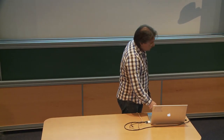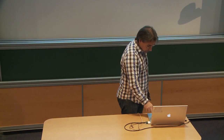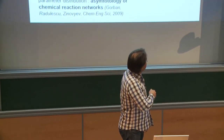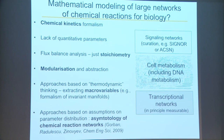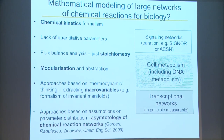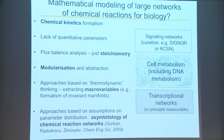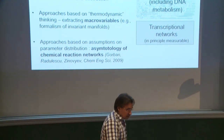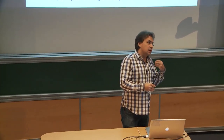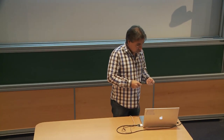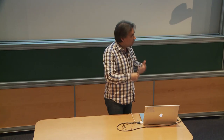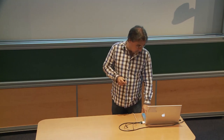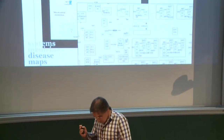Some of these networks are measurable in principle — it's quite expensive, but you can systematically apply experiments to derive the network structure. However, most are constructed not by direct experiment but by reading the literature, because information about these networks is distributed across thousands of publications. People read and extract this knowledge in graphical form. In our group we have done this for more than 10 years, constructing a resource called the Atlas of Cancer Signaling Network.